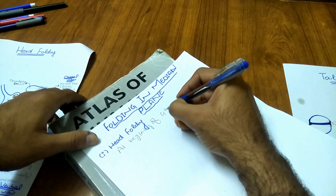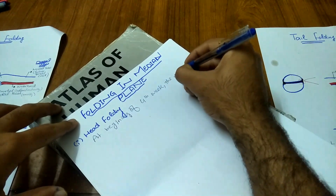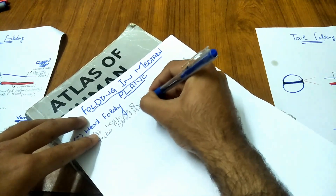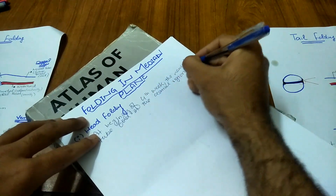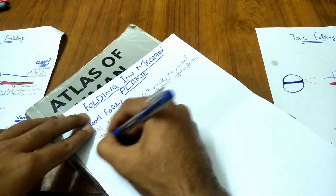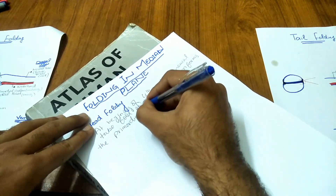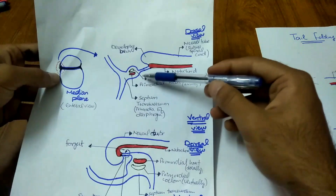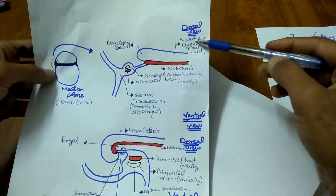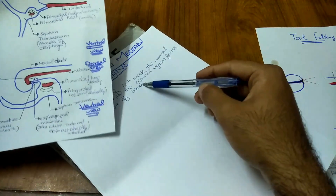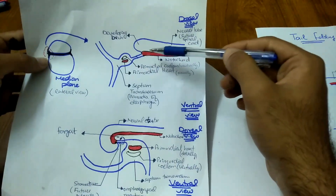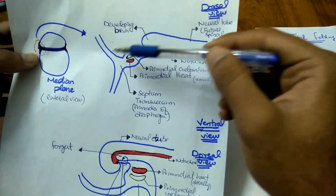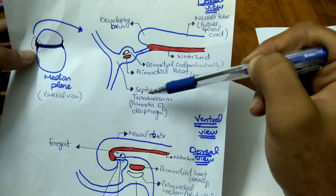In the fourth week, the neural tube folds in the cranial region and forms the primordial brain. This is the head portion — this is the neural tube, the neural fold, forming the forebrain. This red portion is the notochord, this is the primordial coelom, this red portion is the primordial heart, and this is the septum transversum which will form the diaphragm in the future.